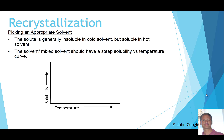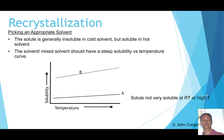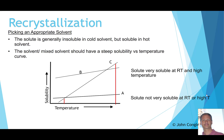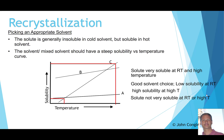Looking at a solubility versus temperature graph: Solvent A has a low solubility at room temperature and a low solubility at higher temperature — not a great solvent to use. Solvent B has a high solubility at both room temperature and higher temperature — also not a good choice. Line C, however, shows a low solubility at room temperature and a high solubility at higher temperature, making it a nice choice of solvent.